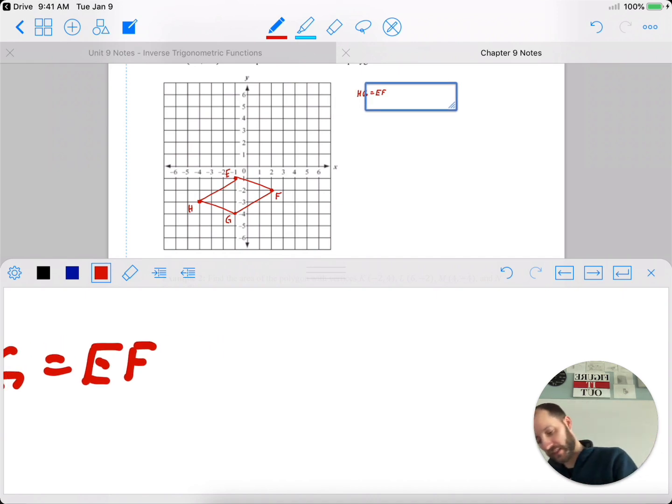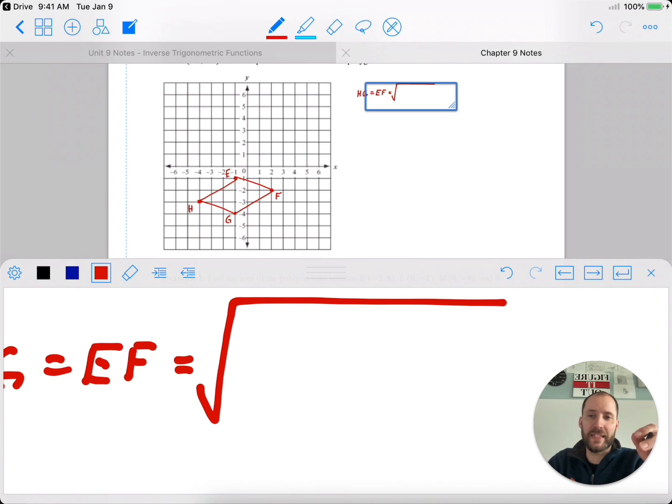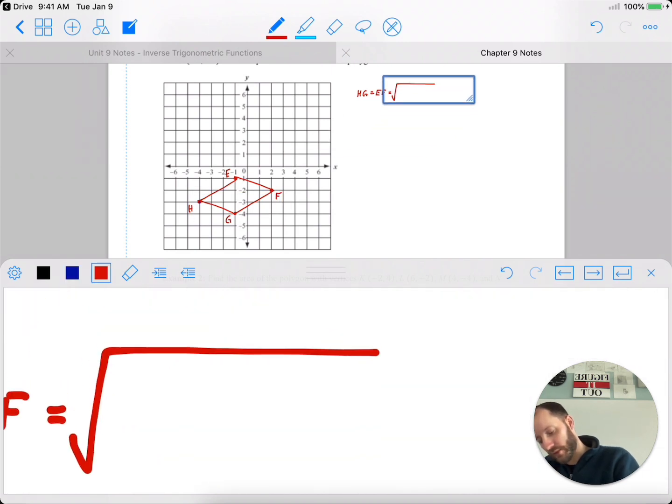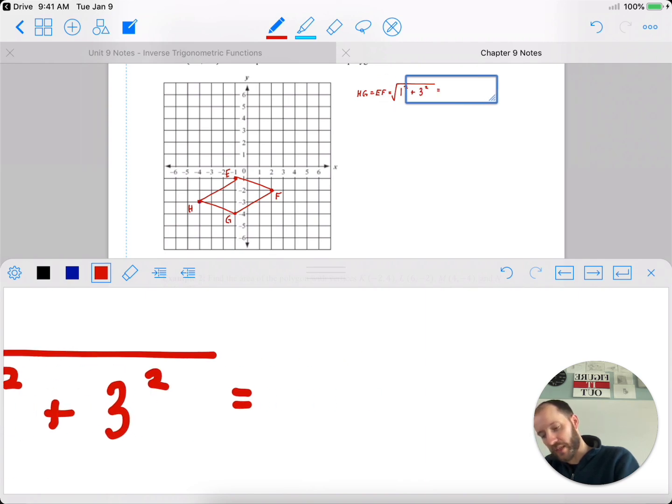So to find the length, I mean, earlier I said distance formula, and you can, but when according to a grid, I'll go with Pythagorean theorem. HG could be the hypotenuse of a right triangle. One of the legs is 1, then the leg is 3. So square root of 1 squared plus 3 squared will give me the length of HG, which is 1 plus 9 root 10.